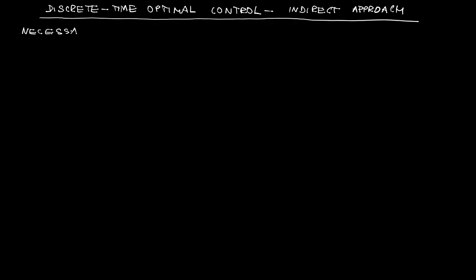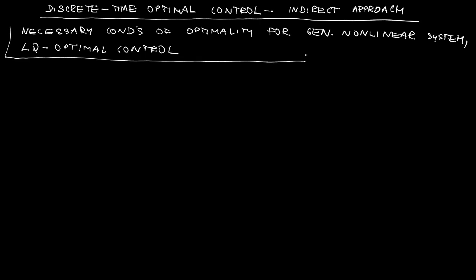Hi, through this video we are going to continue with optimal control for discrete time systems. It's only that now we are starting another approach called indirect approach. In particular, we are going to derive first-order necessary conditions of optimality for a general nonlinear problem here, and then we are going to specialize the results to the popular LQ setting.